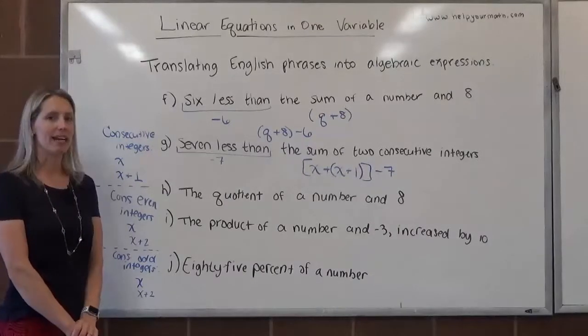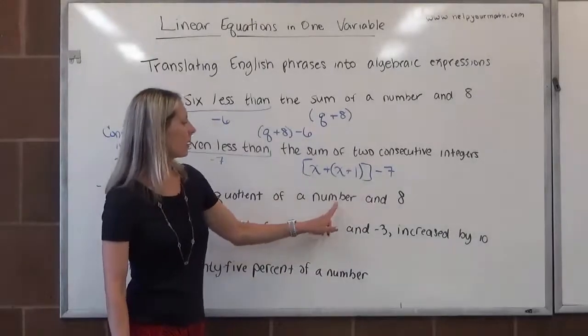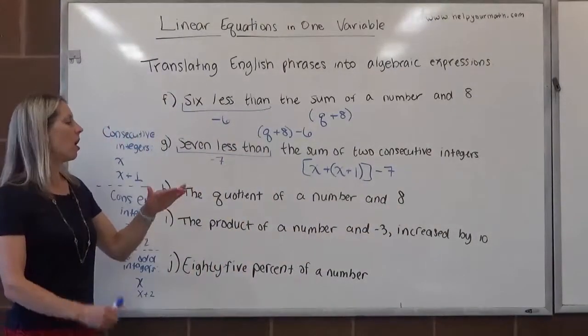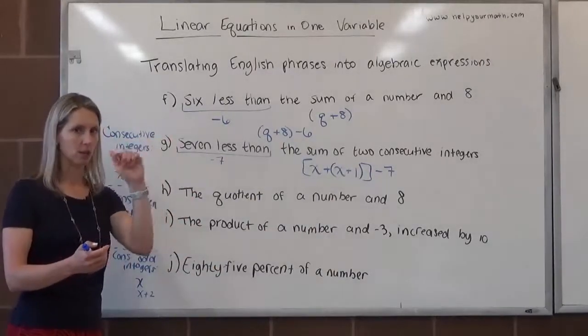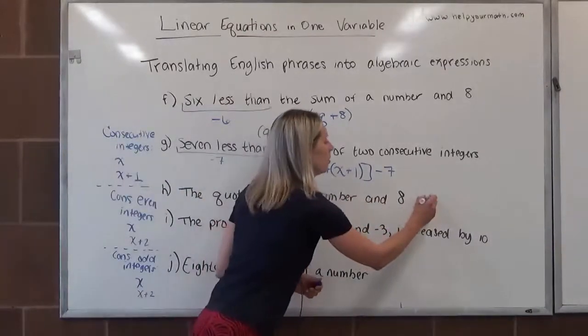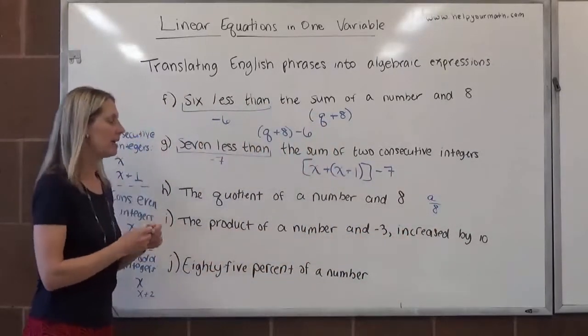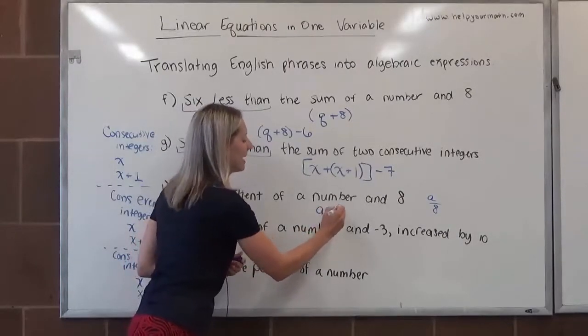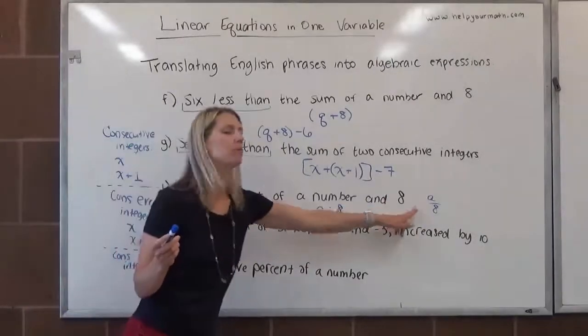Moving on to letter H. The quotient of a number and 8. Quotient implies division. And the two pieces that are being divided are a number, and the other one is 8. When we represent division, typically in algebra, we don't use the little horizontal line segment and two dots. We use a fraction, so that's what we'll do here. So the number, the unknown, is our numerator, and 8 is our denominator. It's not wrong if you do use that, it would just be a divided by 8. Just in algebra, we typically don't use this symbol. We use fractions instead.